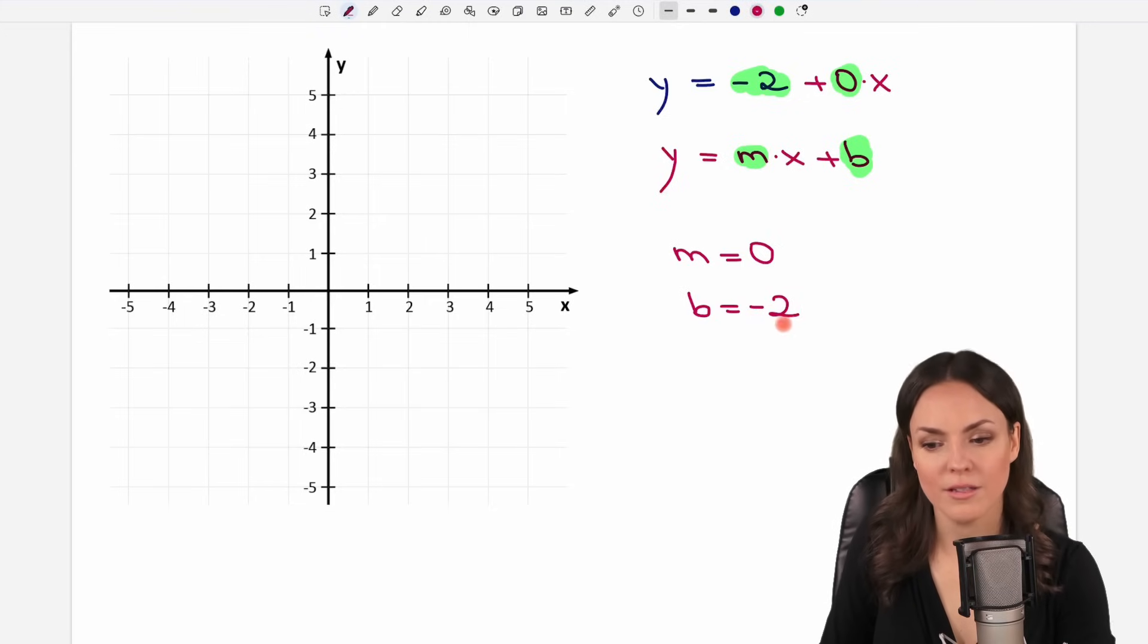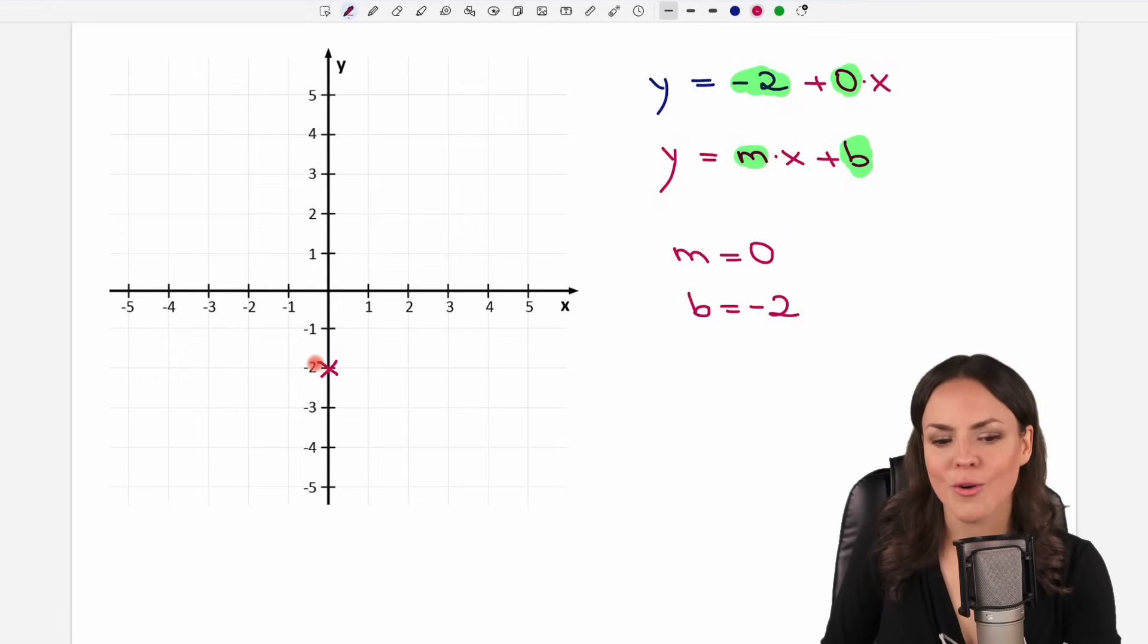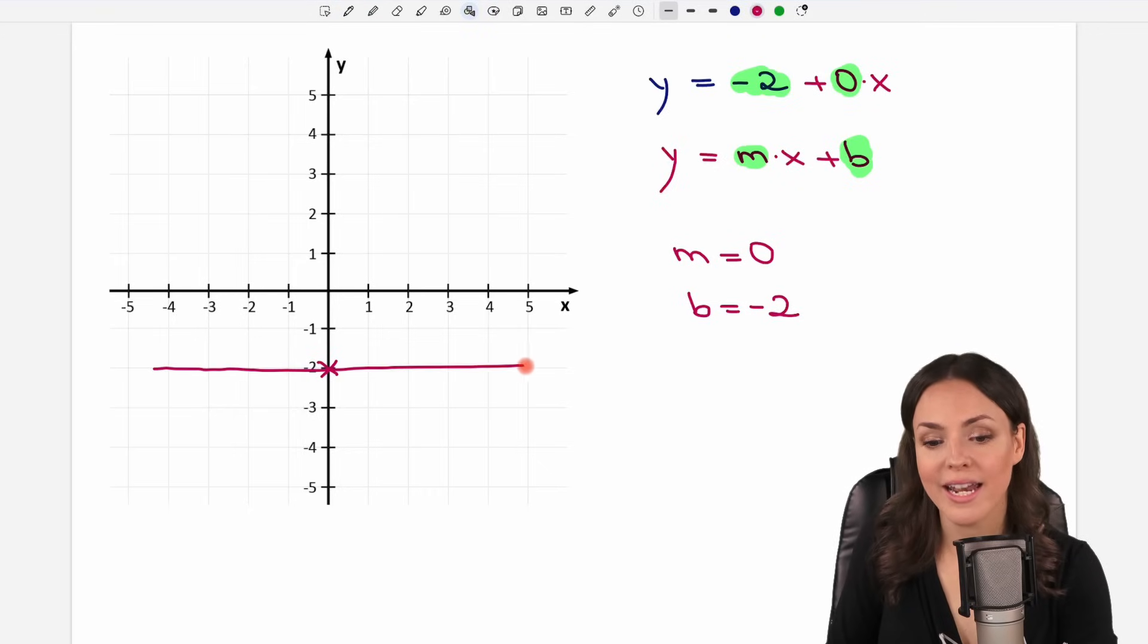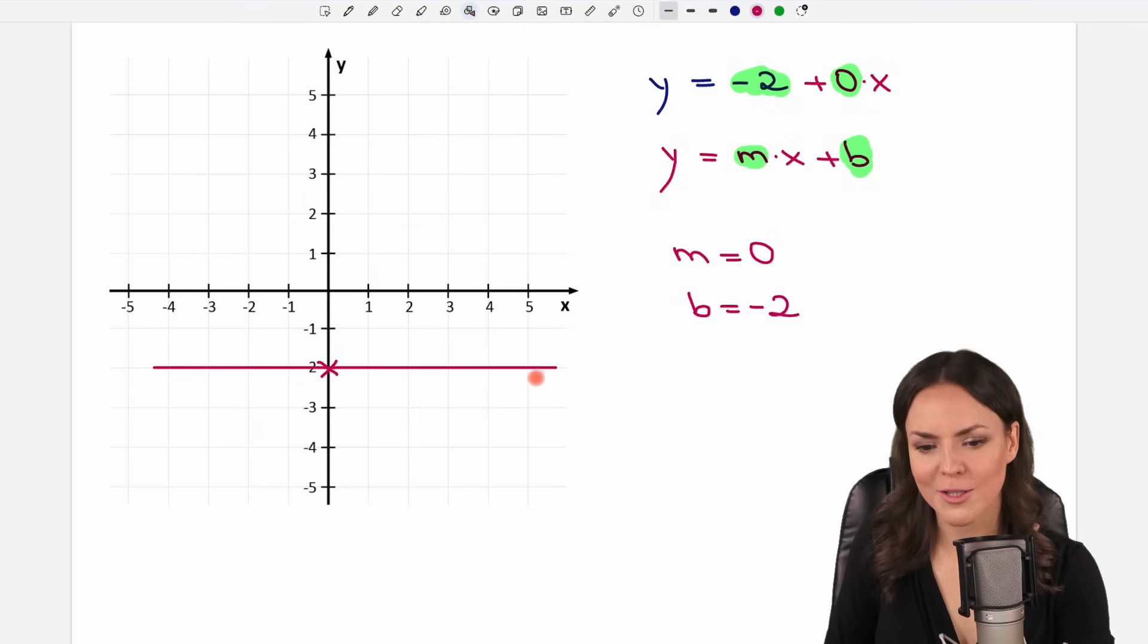So to draw this line, we start at negative 2 on the y-axis, so here. And from here, we have m equals 0, so our slope equals 0. So our negative 2 or the line we have to draw is just a line through negative 2 because our slope is 0. So this is the special case to this equation here.